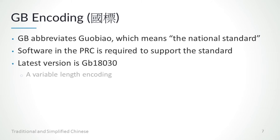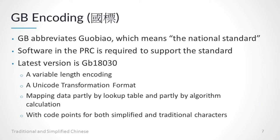For simplified Chinese characters, GB is the most commonly used encoding. GB abbreviates the term meaning the national standard. The GB encoding is mainly used in mainland China and Singapore. There are different versions of GB standards, and the latest version is GB18030. It is a variable length encoding with one, two, or four bytes. It can be considered a Unicode transformation format that maintains compatibility with a legacy character set, with part of the mapping data from a lookup table and the remaining by algorithmic calculation.